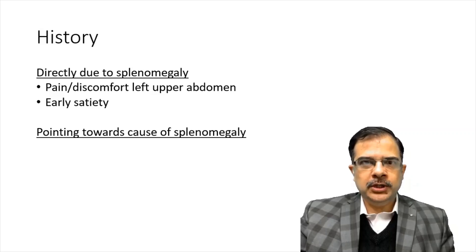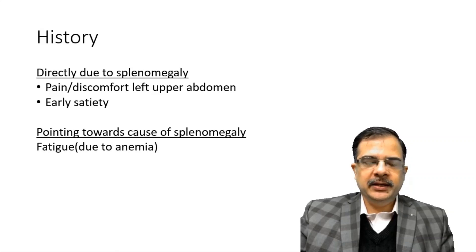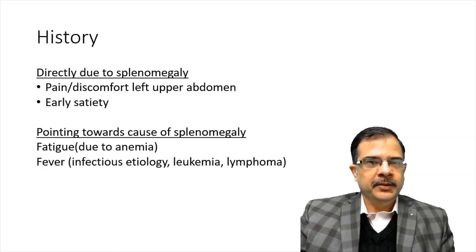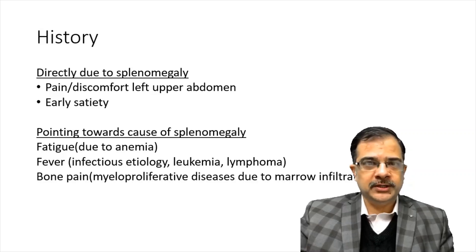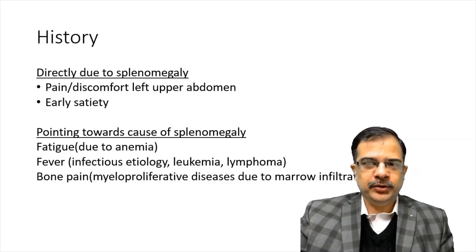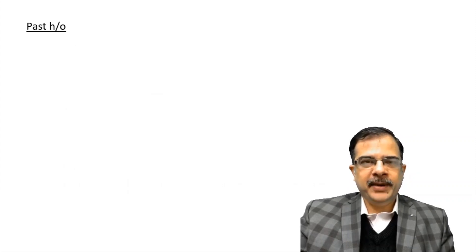Any history should focus on points that give us a clue: if a patient complains of fatigue, this will be because of anemia. A patient complaining of fever suggests infectious etiologies, leukemias, lymphoma, or autoimmune disorders. Bone pain points towards myeloproliferative disorders due to marrow infiltration. Hematemesis points towards the etiology of portal hypertension. These are the points we will be asking in the present history.